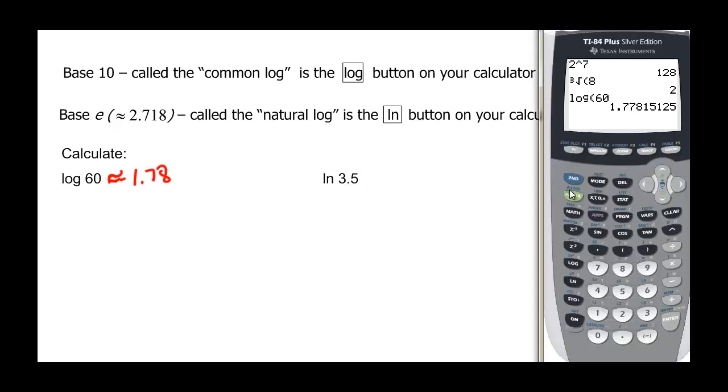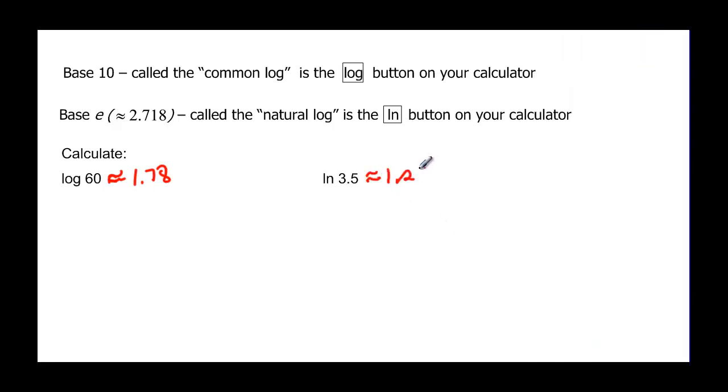And then we could do the same thing with the ln. Now the ln is below the log key, and it's ln 3.5. We get 1.25 approximately. So now we know how to figure out logs. If they're logs or natural logs, we can go to our calculator.